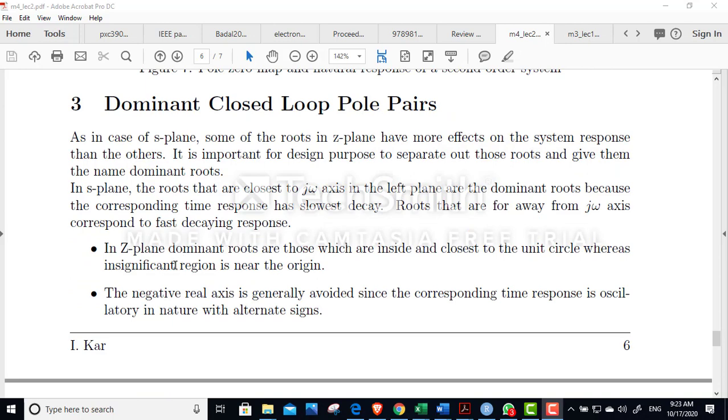Now, the dominant pole in the z-plane. The dominant poles are those which are inside and closest to the unit circle, where the insignificant region is near the origin. The negative real axis is generally avoided since the corresponding type of response is oscillatory in nature with alternate sign, as I mentioned before.